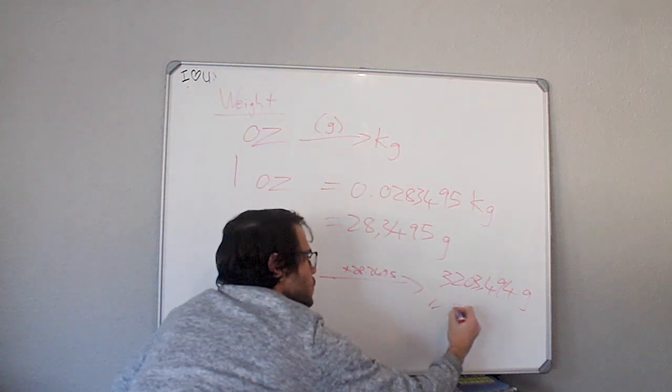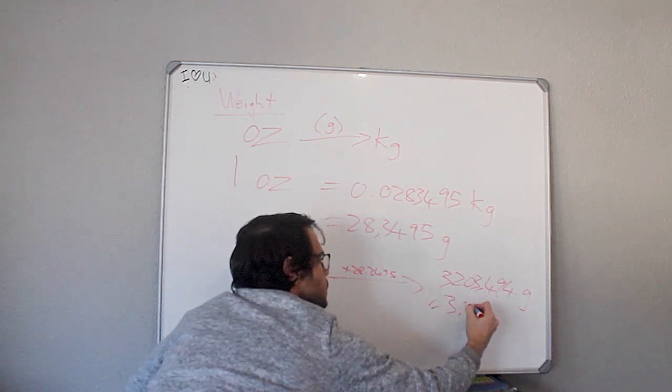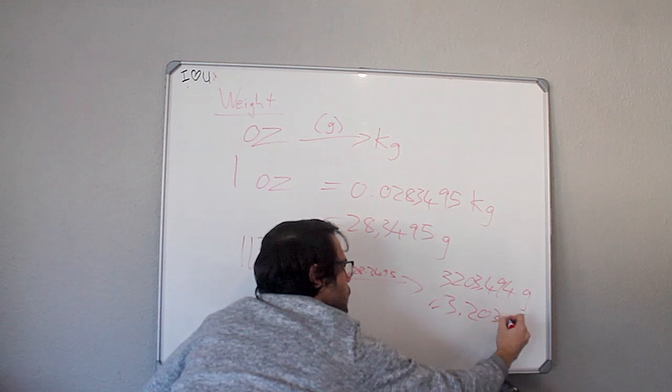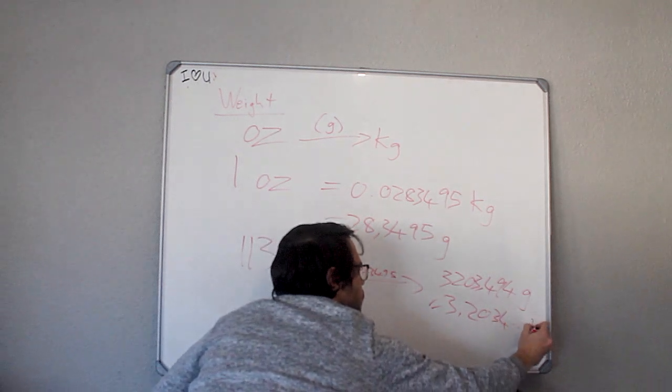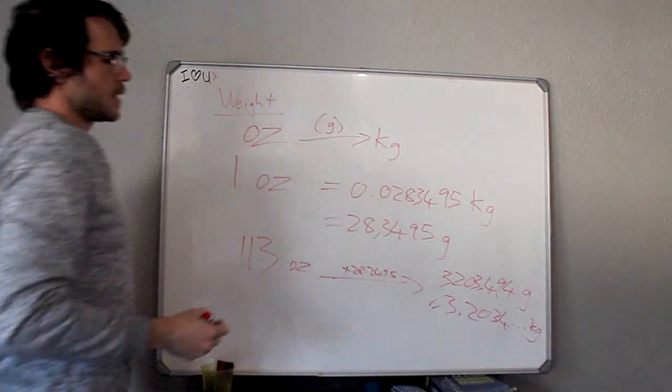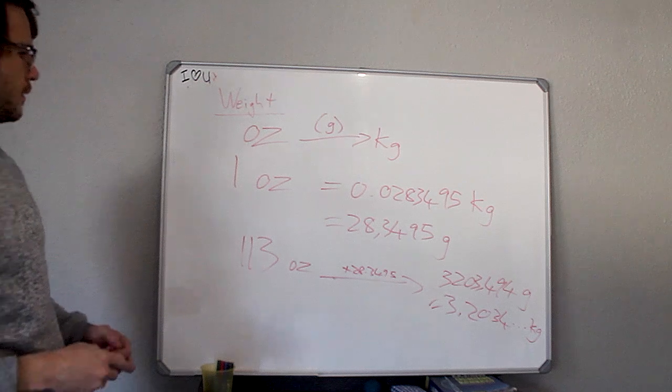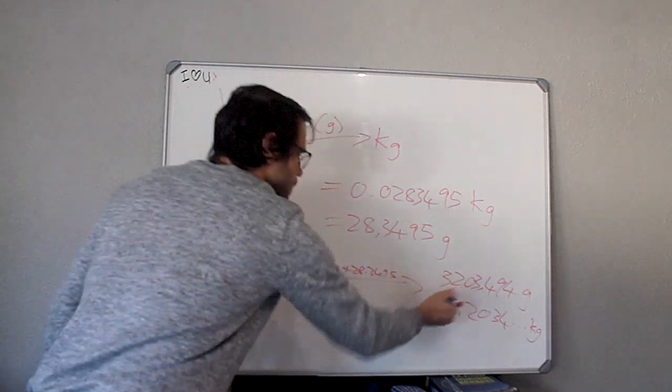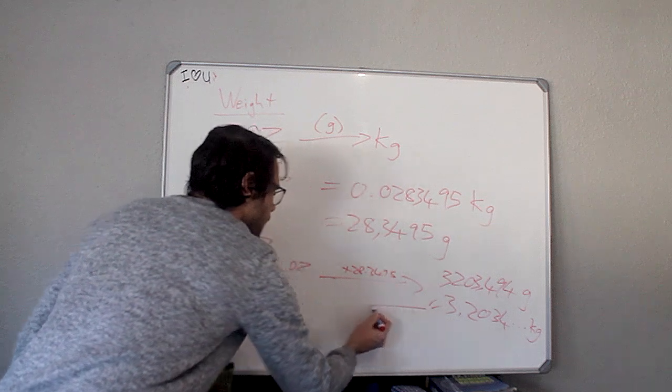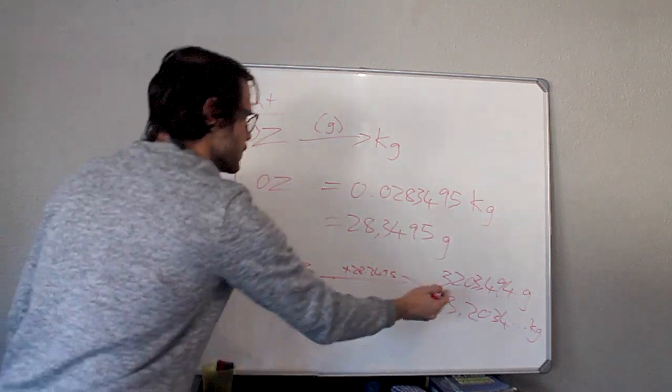Now we divide by 1,000 to give us a kilogram value, which is equal to 3.2034 kilograms. And again, converting backwards, we now want to convert backwards to ounces.